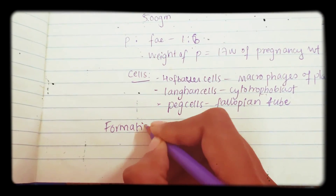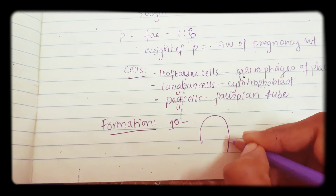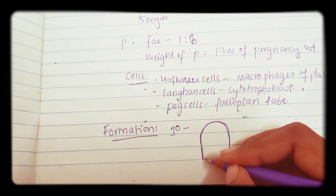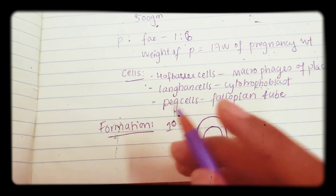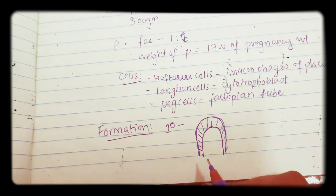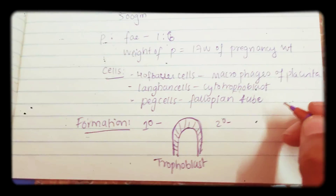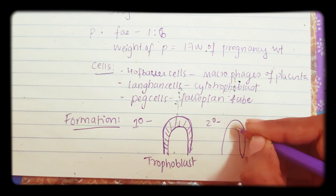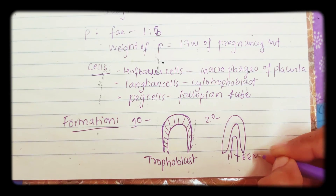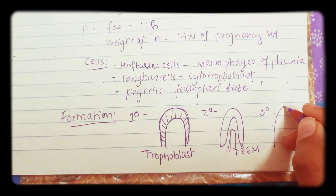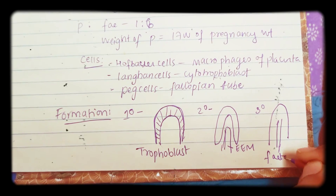Now let us see the formation of placenta. The placenta is mainly formed by villi — primary, secondary, and tertiary. Primary villi have only a trophoblast layer. Secondary villi have a trophoblast with an extra-embryonic mesoderm layer. Tertiary villi have all the layers plus one fetal capillary blood vessel.